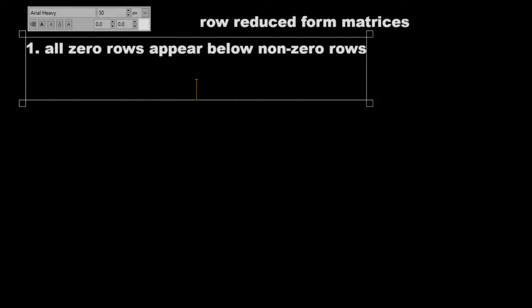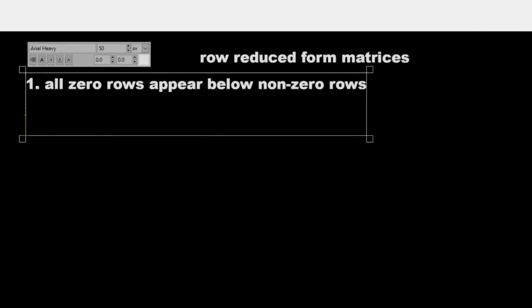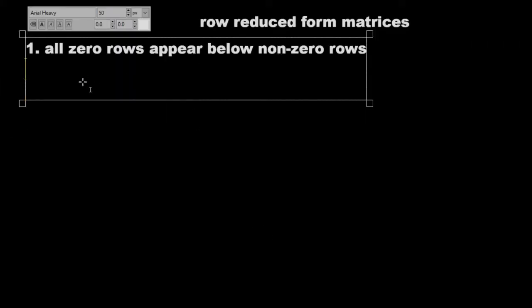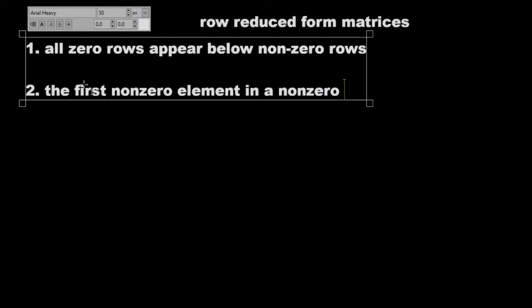And the second rule: the first non-zero element in a non-zero row is unity, which is the number one.